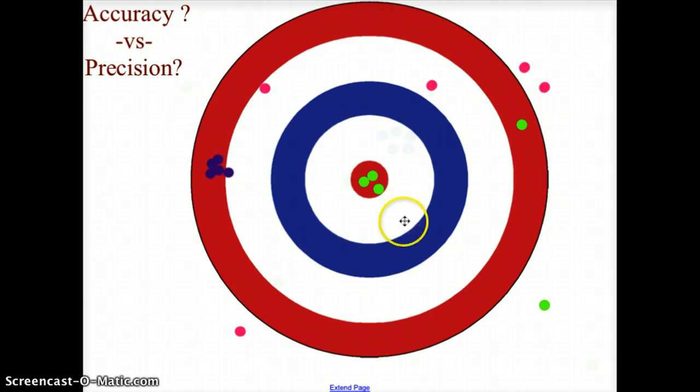And the third shooter goes, and that third shooter hits three in the bullseye but has two pretty scattered, and then the fourth shooter shoots right here on the edge of the inner white circle.